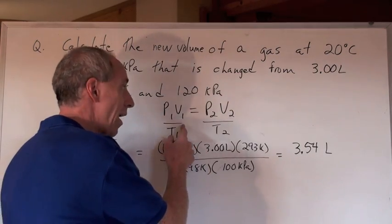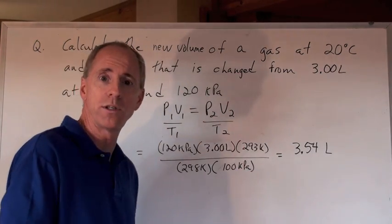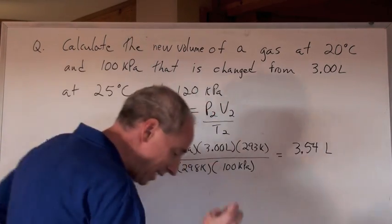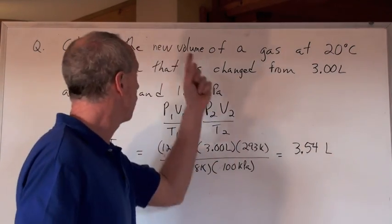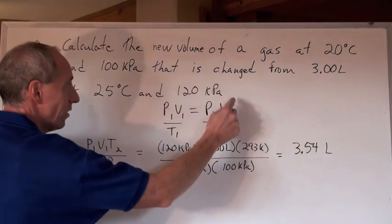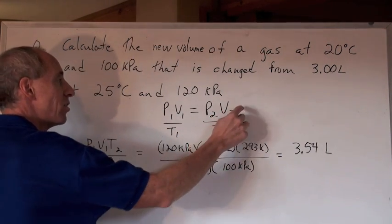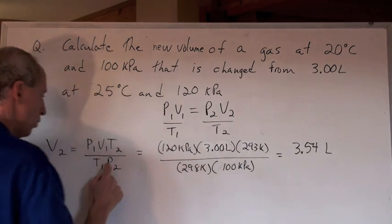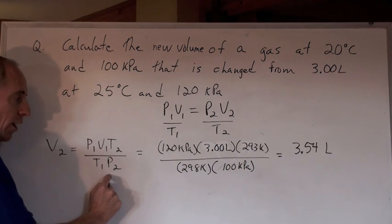So we're going to use now the new formula that we wrote down, that's called the combined gas law formula. And we're going to take that, and we're going to need to isolate, first of all, what are we looking for? The new volume, that's the V2. So we're going to isolate V2 by multiplying each side by T2, and then dividing each side by P2 to get this formula right here.